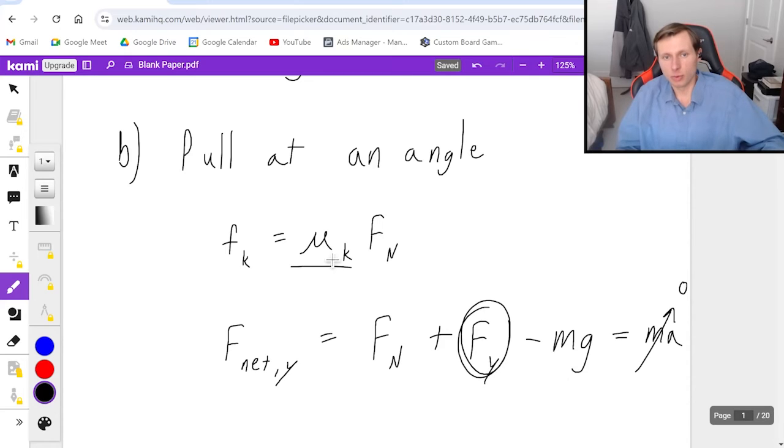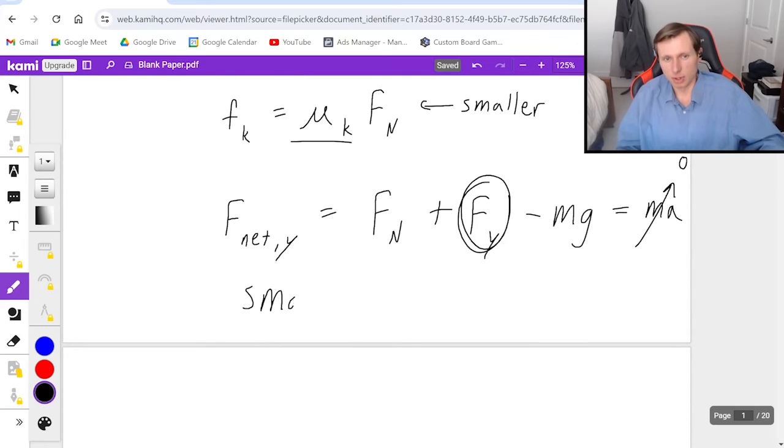And because we're introducing this Fy that wasn't there before, it basically makes the normal force smaller. So the normal force is now smaller, which then makes the frictional force smaller. And that's the answer when I pull at an angle.